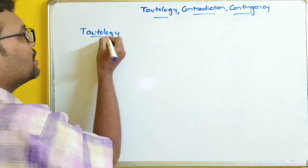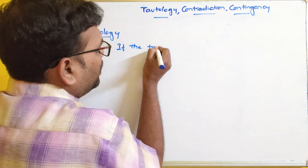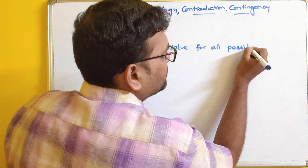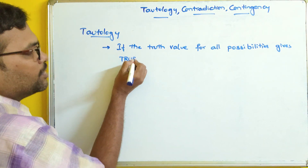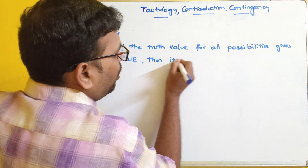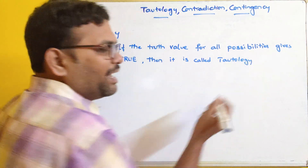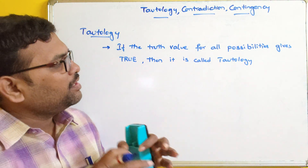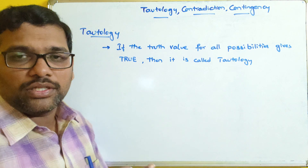The first one is tautology. When will we call a compound proposition a tautology? If the truth value for all possibilities gives true — that means the last column should have all truths — then it is called a tautology. For every compound proposition, we find the truth table, and if all possibilities give true, then such a compound proposition is called a tautology.